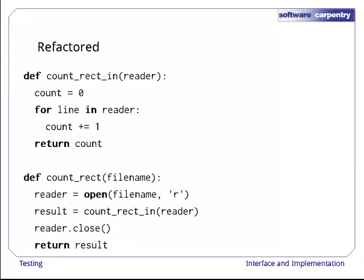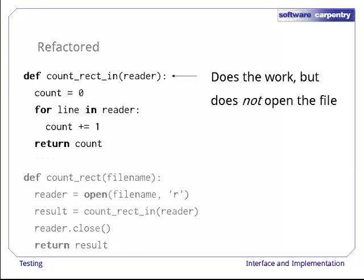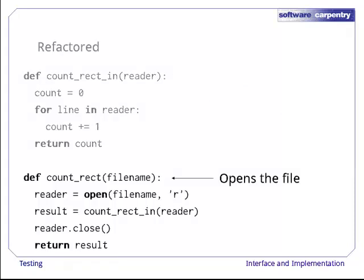Here's the function after refactoring. We've taken the inner core of the original function and made it a function in its own right. This new function does the actual work, i.e. it counts rectangles, but it does not open the file that the rectangles are read from. That is still done by the original function. It opens the input file, calls the new function that we extracted, then closes the file and returns the result. Notice that this function keeps the name of the original function so that any program that used to call countrect can still do so.